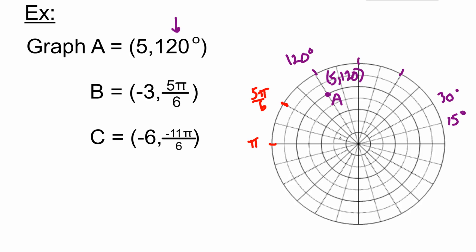We have 5π/6 and then -3. How do we handle negative 3? Instead of going out 3 toward 5π/6, we go 3 away: 1, 2, 3. This point in red is point B. It's 5π/6 and we go 3 in the opposite direction.